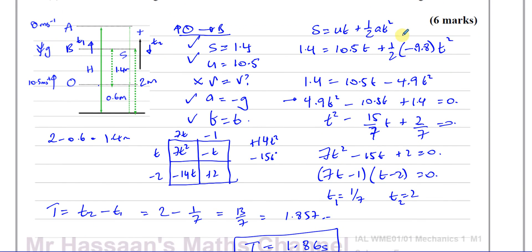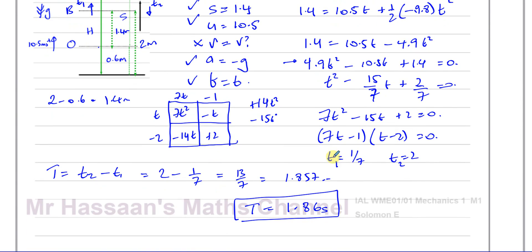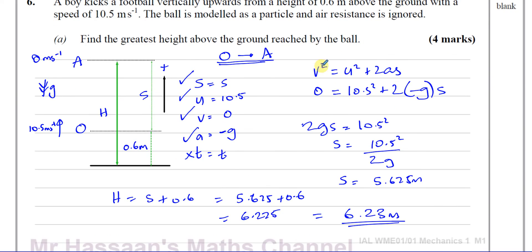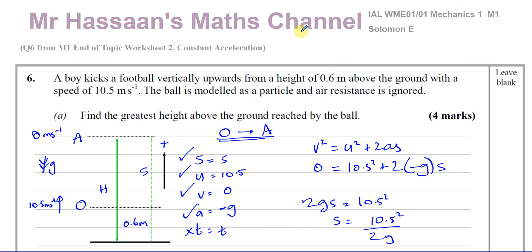So the answer to part B is 1.86 seconds. If this were Cambridge, you'd use G = 10 throughout and would likely use the quadratic formula to get a similar answer. That's the only difference between Cambridge and Edexcel for M1 questions like this. Any other questions from this Solomon e-paper or the end of topic worksheet can be found in the playlists linked here. You can also subscribe to my channel — thank you for watching and see you soon.